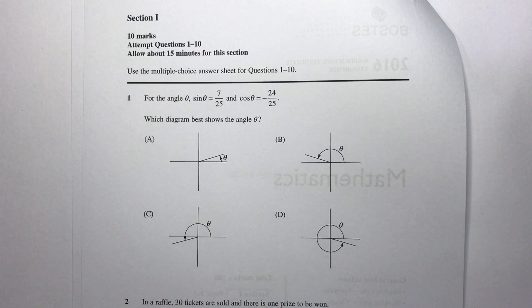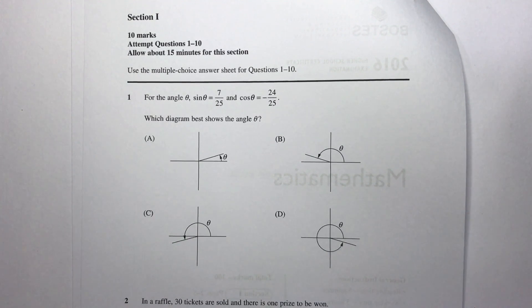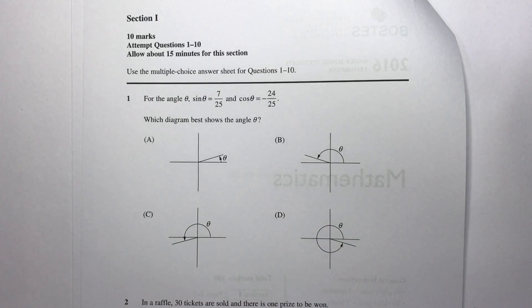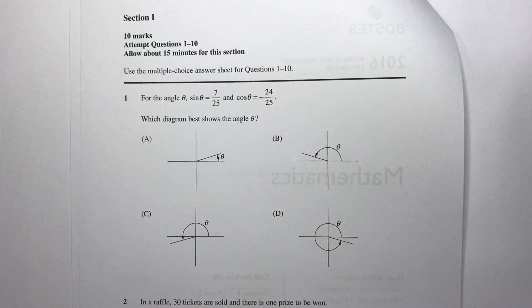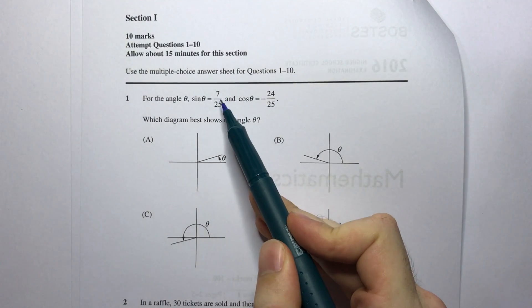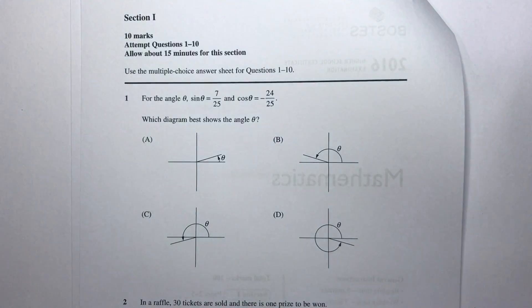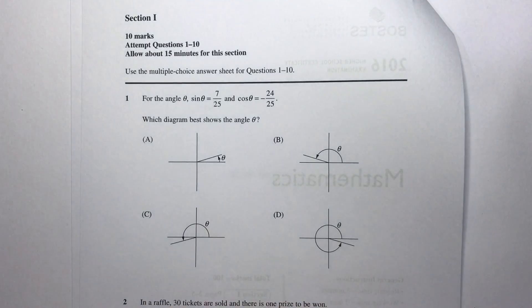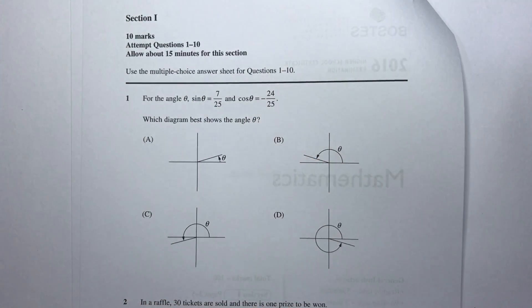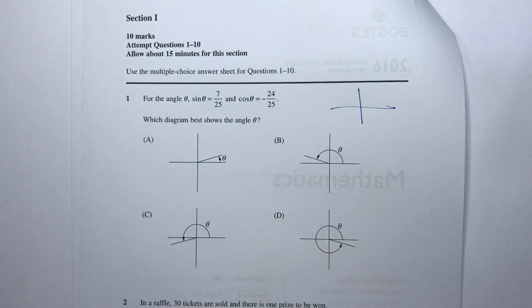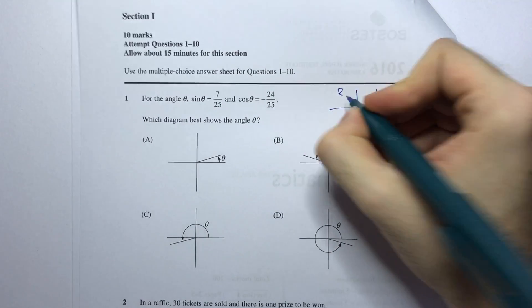The first question: For the angle theta, sine theta equals 7 over 25 and cos theta equals negative 24 over 25. Which diagram best shows the angle theta? The truth about this question is that we don't particularly care what the values of sine theta and cos theta are. We actually only care about the sign in front of them, whether it's positive or negative. From the first bit here, sine theta is 7 over 25, positive 7 over 25. Now since it's positive, it has to be in either the first or the second quadrant.